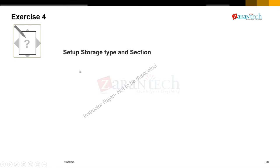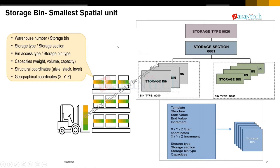We are at exercise number four, where we set up TRKG rack storage, sections, and enabled the staging area. Moving ahead, we'll talk about the storage bin — the smallest spatial unit. The bin is not an org element. So far we've seen storage type, section, and activity area is still pending. Let's jump to the bin. A group of bins can be called a section — a fast-moving or AV section.